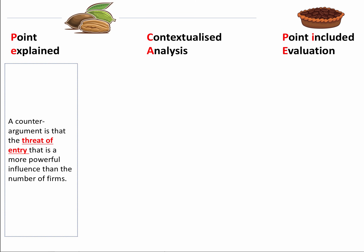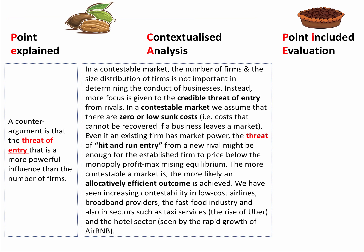A third point, a counter-argument, is that the threat of entry is a more powerful influence than the number of firms. The question is about whether more firms coming into the market is important — well, this point is that it's not the number of firms, it's actually the threat of entry. This links us back to the theory of contestable markets. In a contestable market, the number of firms and the size distribution is not important in determining the conduct of businesses. Instead, more focus is given to the credible threat of entry from a potential rival.